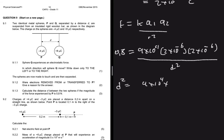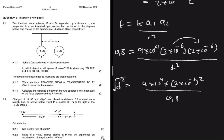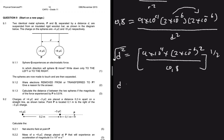We have d² = (9×10⁹ × (2×10⁻⁶)²) / 0.8. Taking the square root of both sides — which is the same as raising to the power of one half — we get d = 0.21 meters. And just like that we have solved the problem.